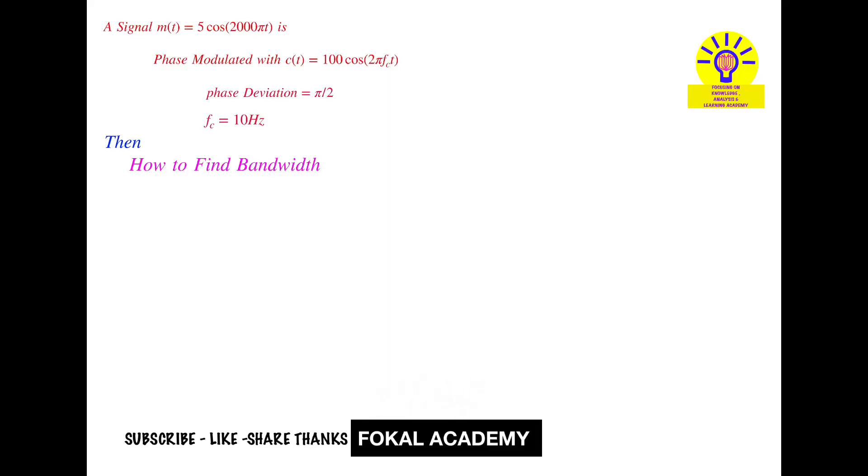Seeing this problem, here one message is given, that is M(t) = 5 cos(2k pi t). This is phase modulated with a carrier signal C(t) = 100 cos(2 pi fc t).